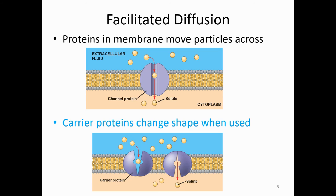In this other picture, there's something called a carrier protein, which actually changes shape — it's almost like a gatekeeper, so only specific particles can move through it. Those are different types of facilitated diffusion, where any particle goes across the cell membrane using a protein.